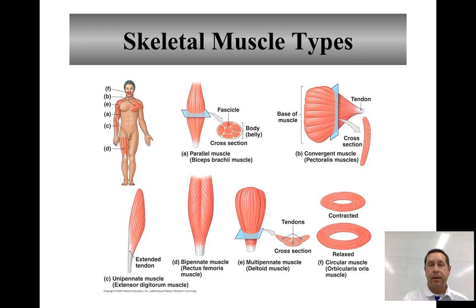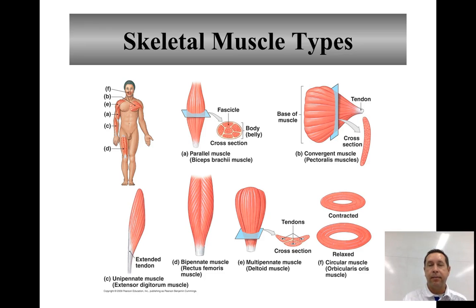The second type is called a convergent muscle. In convergent muscles, the fascicles are spread across a broad base but come together at a common attachment point — kind of triangular-shaped muscles. The pectoralis muscles are an example of convergent muscles.